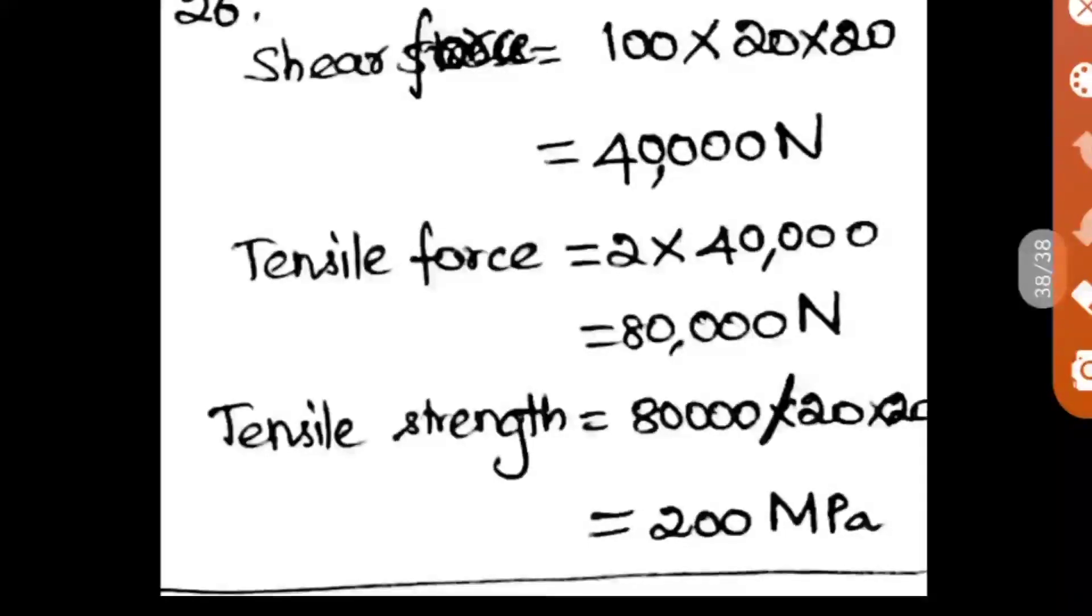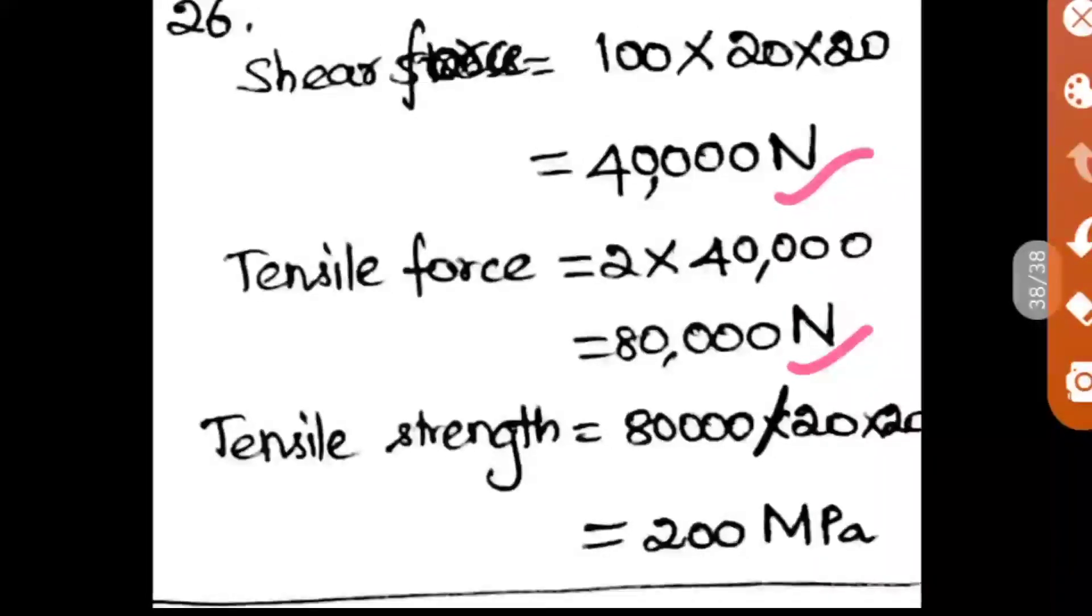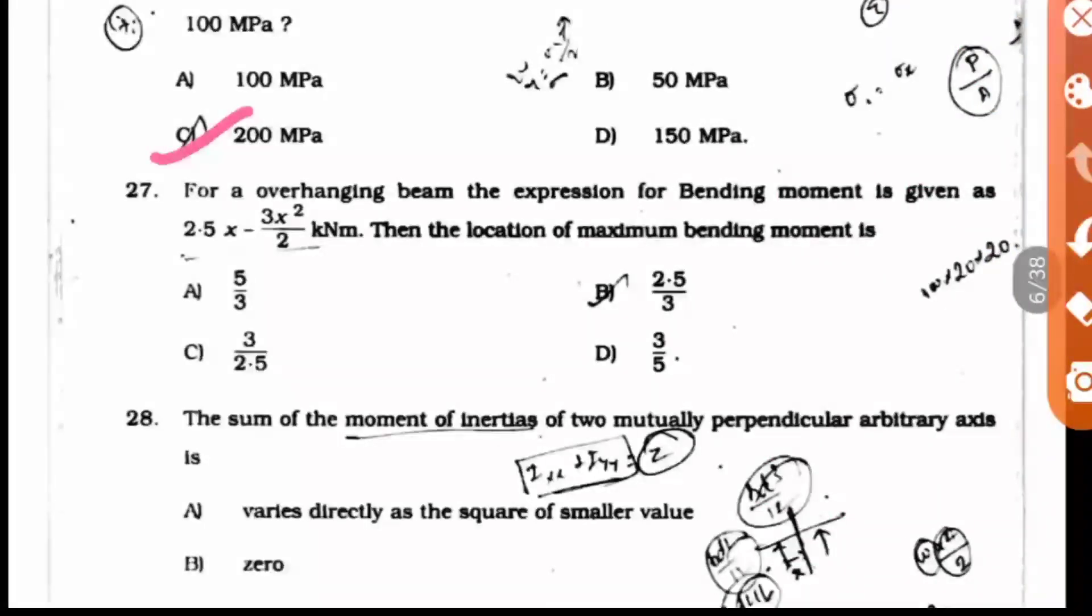With this we have to find the tensile force. It is 2 times the shear force, so it is 80,000 N. But in the options they have given it in MPa. The question asked for tensile force, but the options give strength. So we have to find the strength. It is 80,000 by the area 20 by 20, so we get 200 MPa. Option C is the right answer.